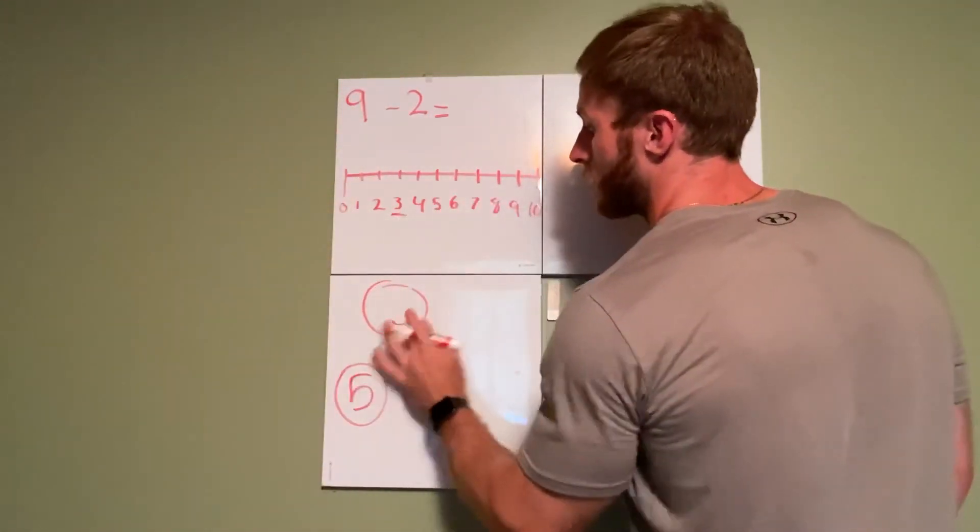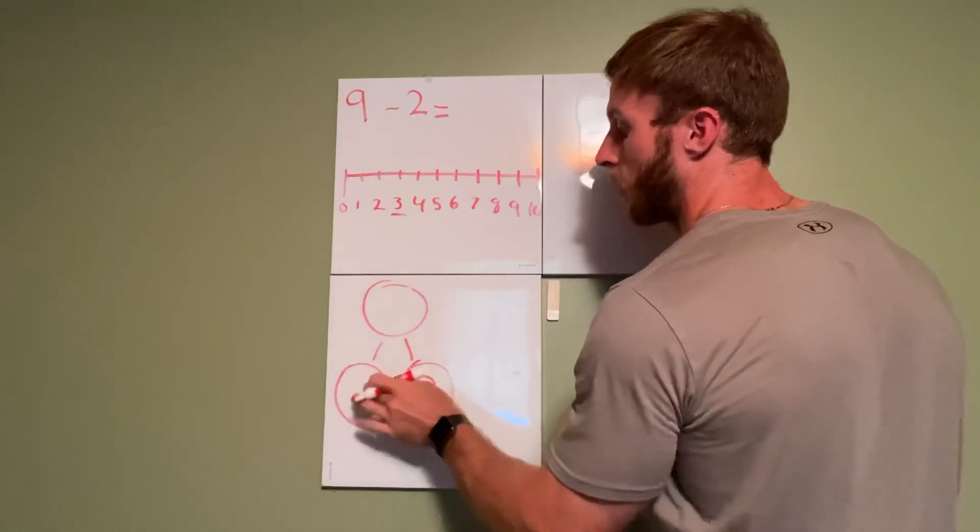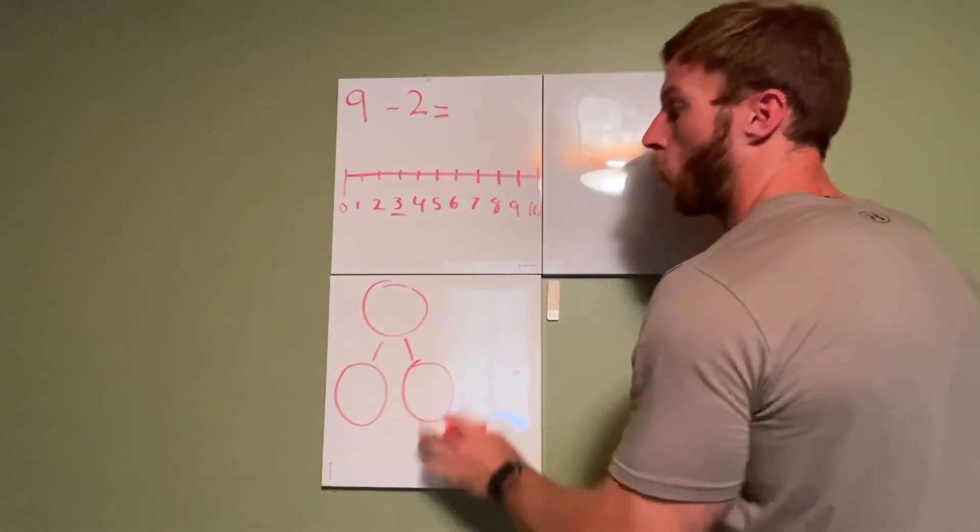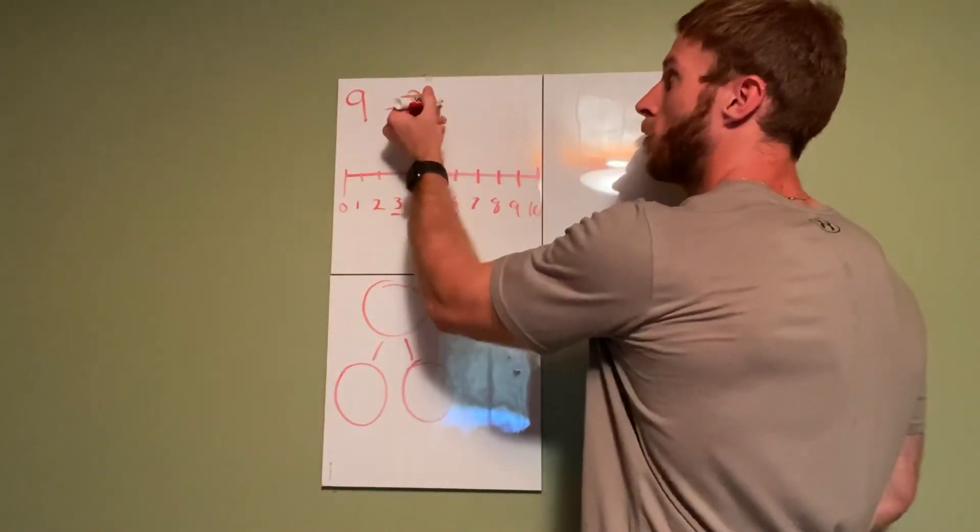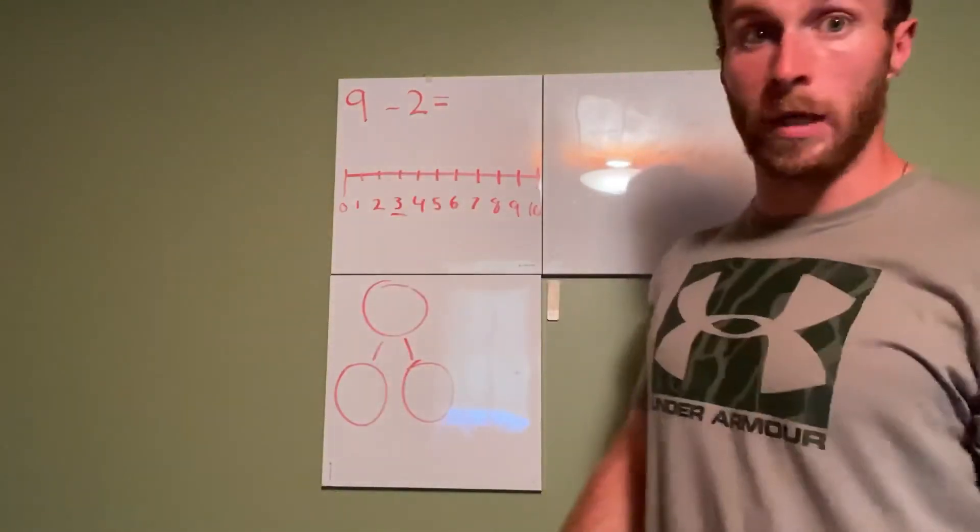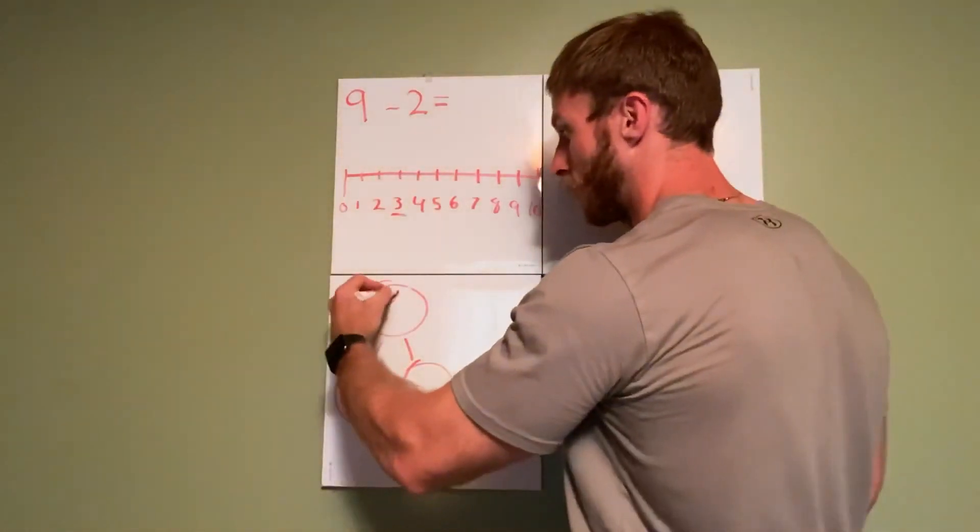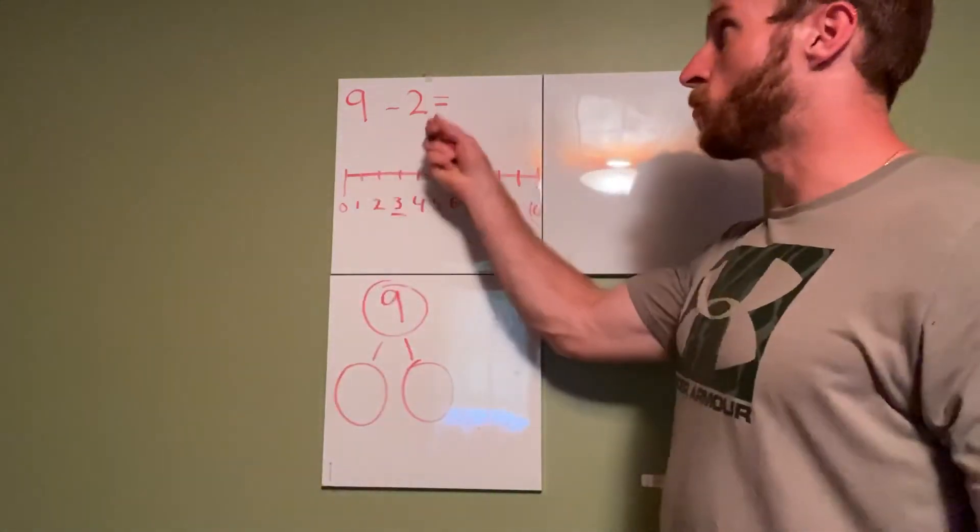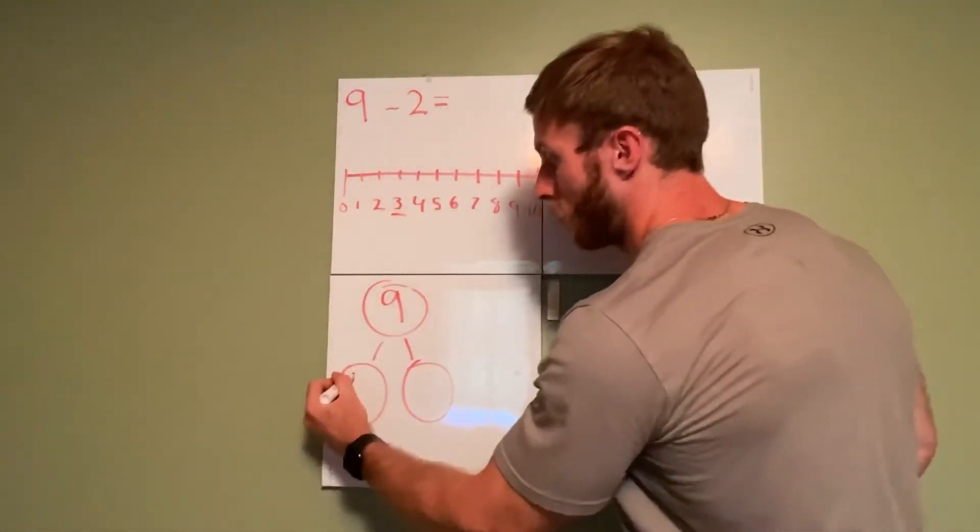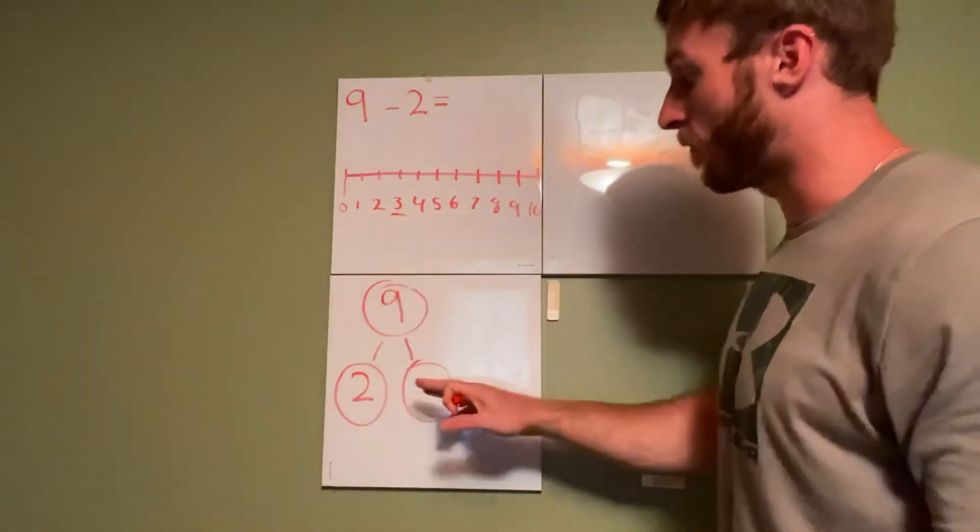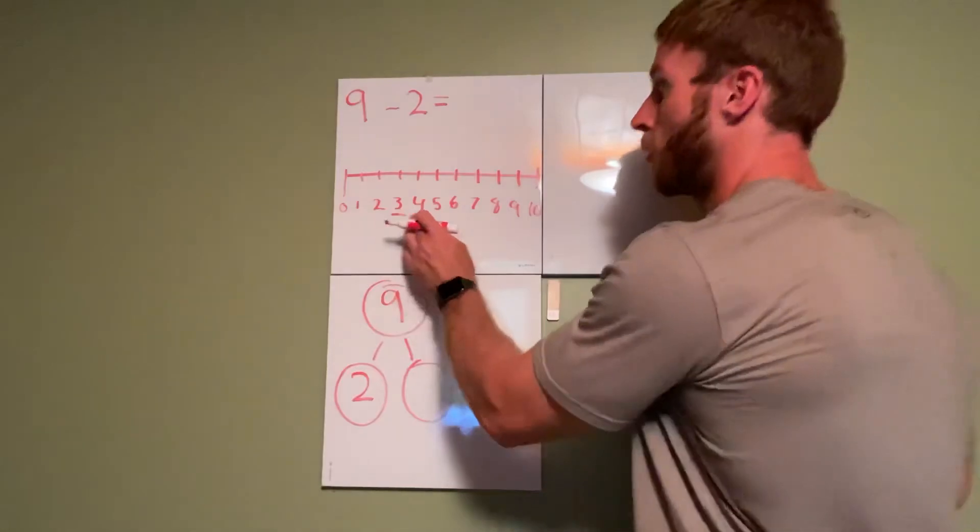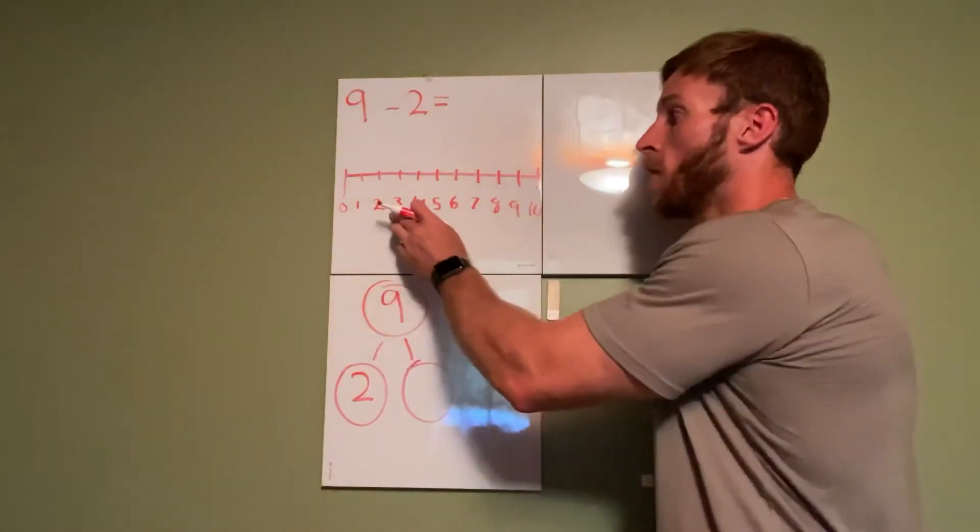Nine minus two. Now if I want to start by filling in my number bond, what is my whole in this number sentence? My whole is the number we start with which is nine, so nine goes up here. We are subtracting two which is one of our parts.